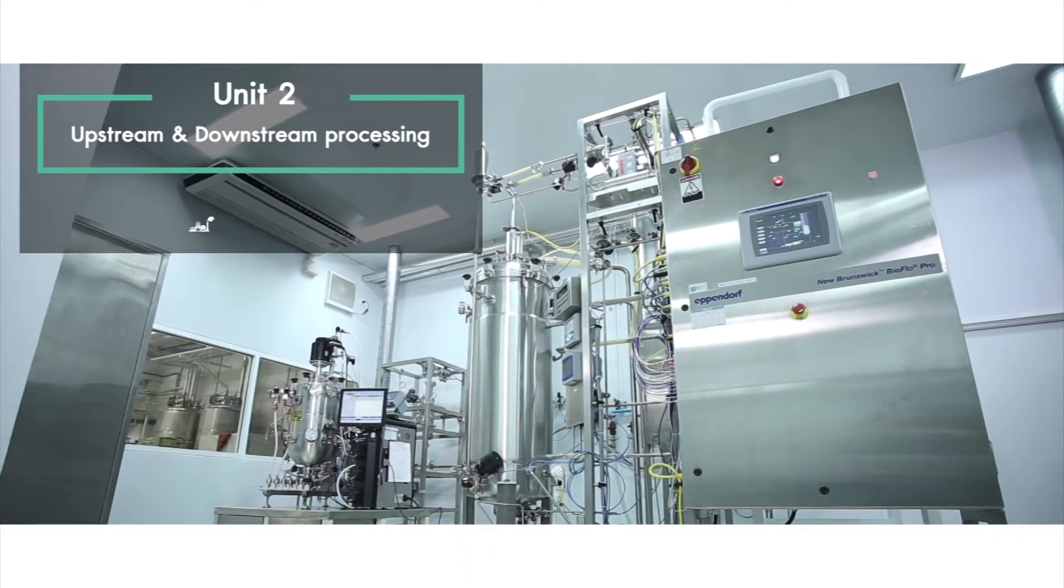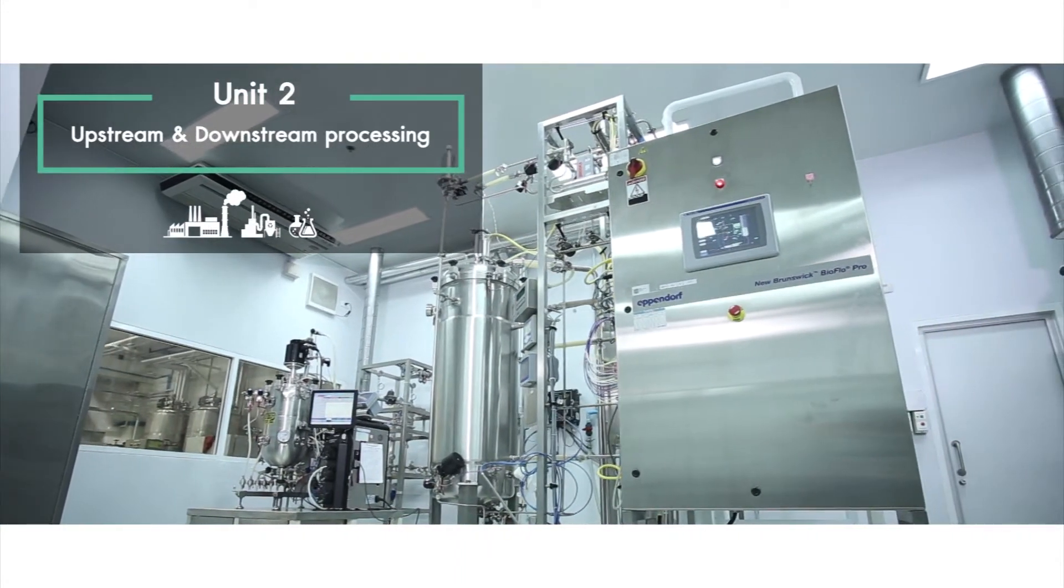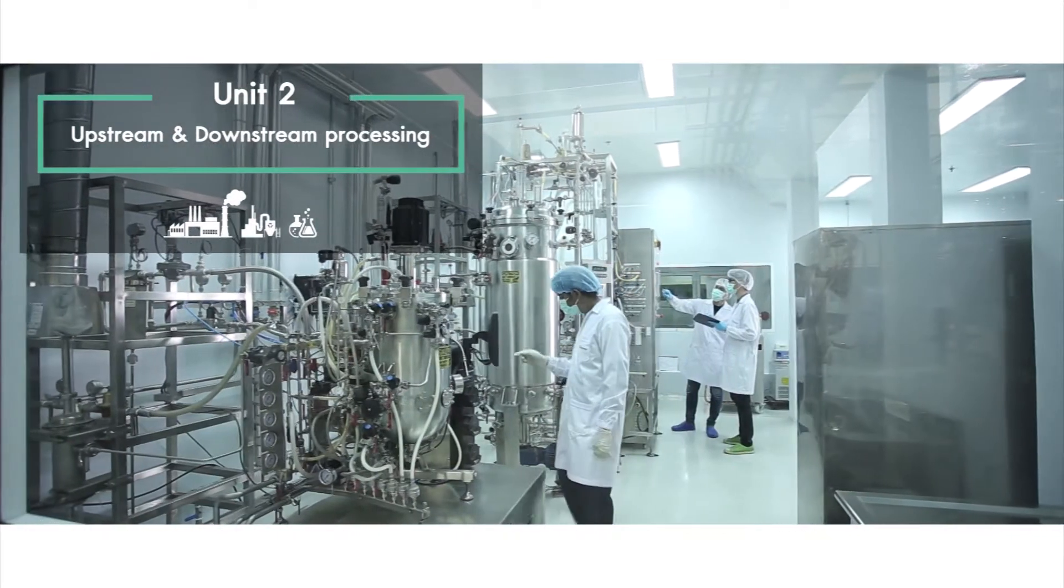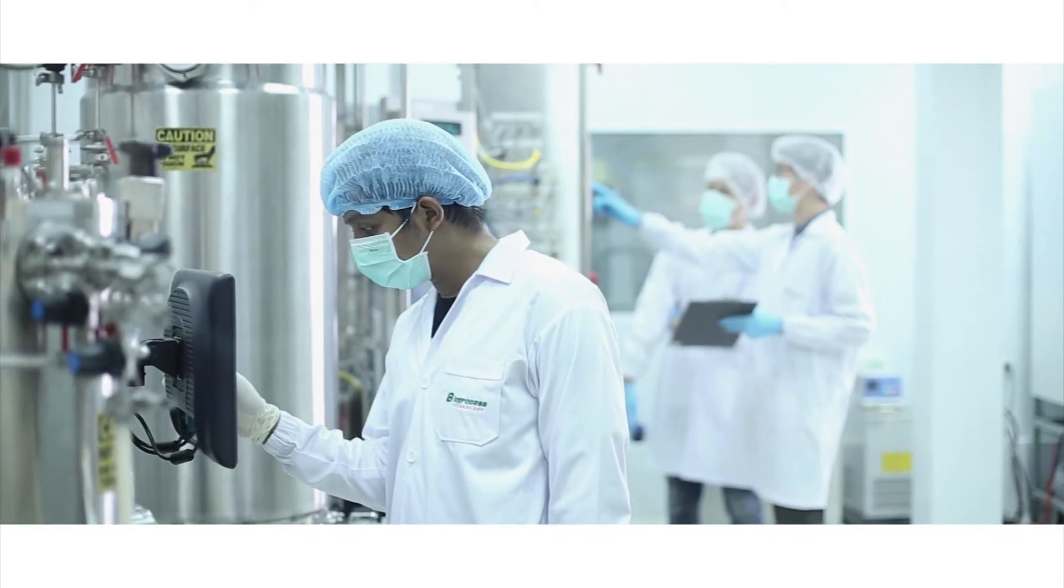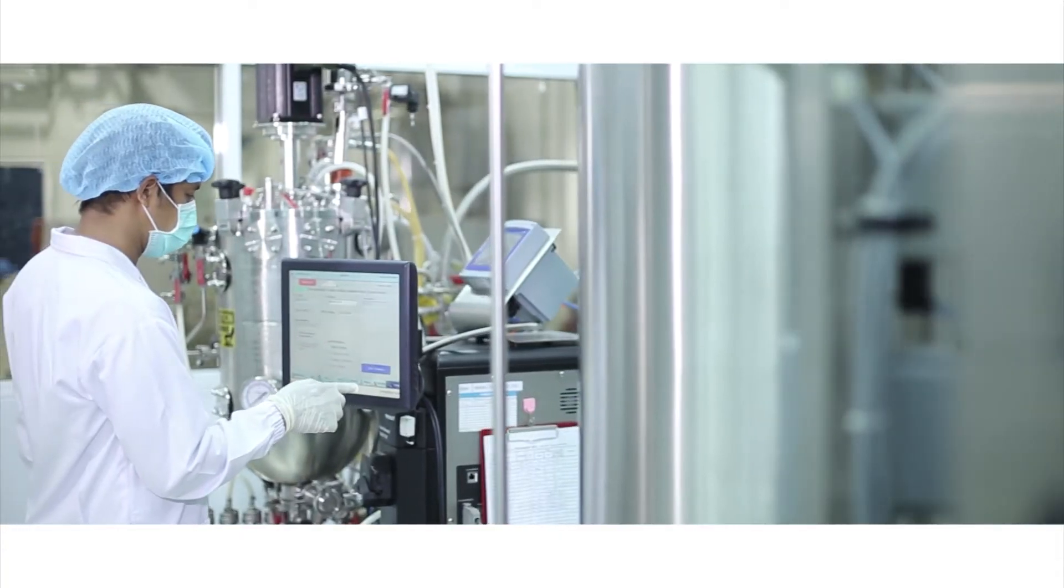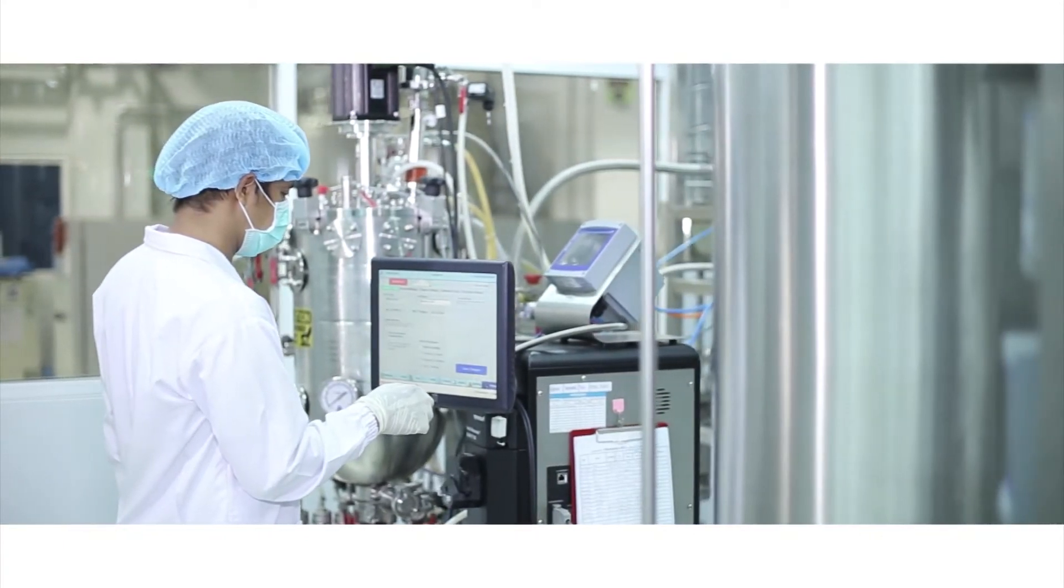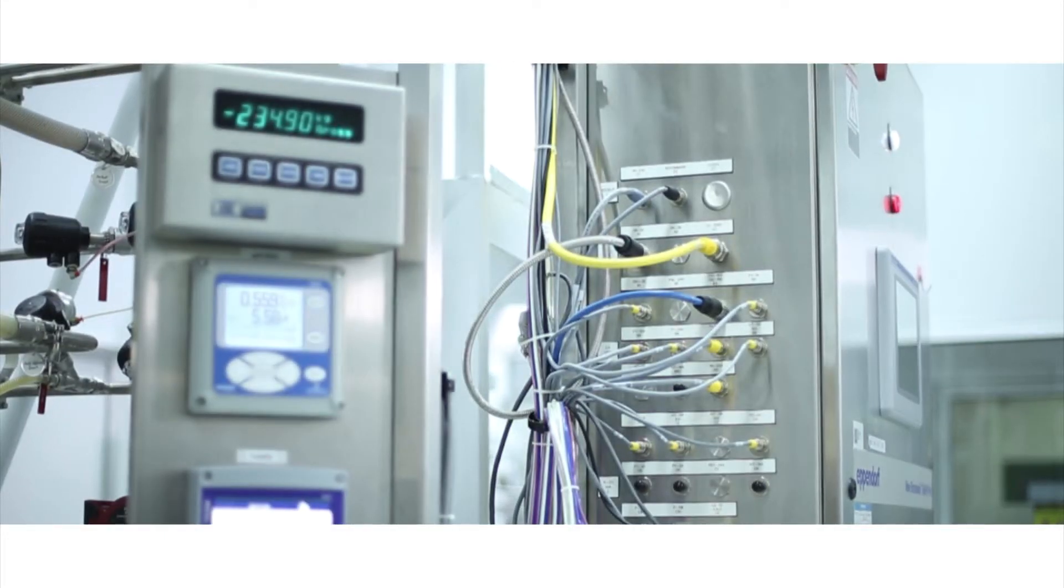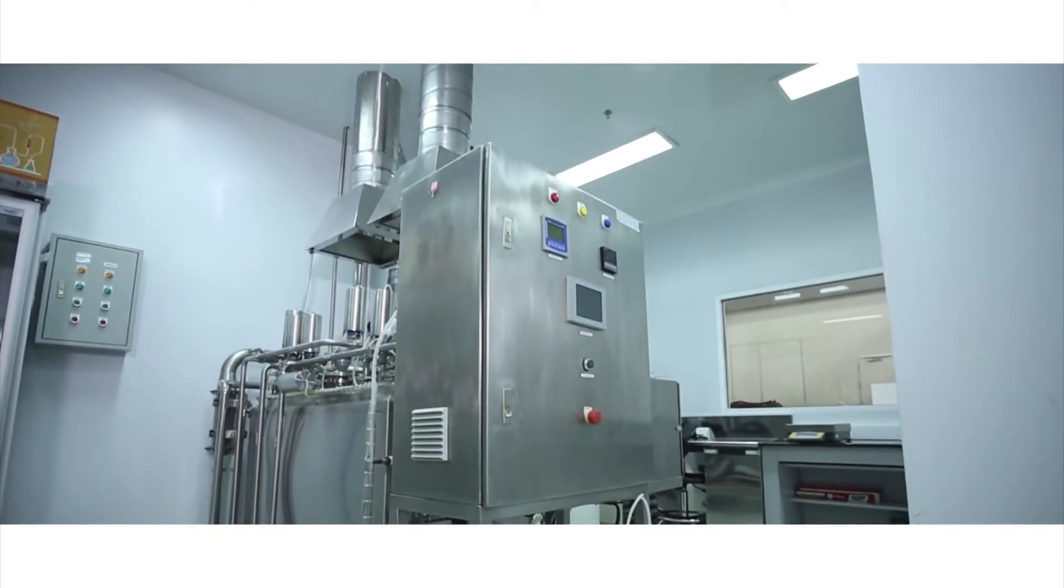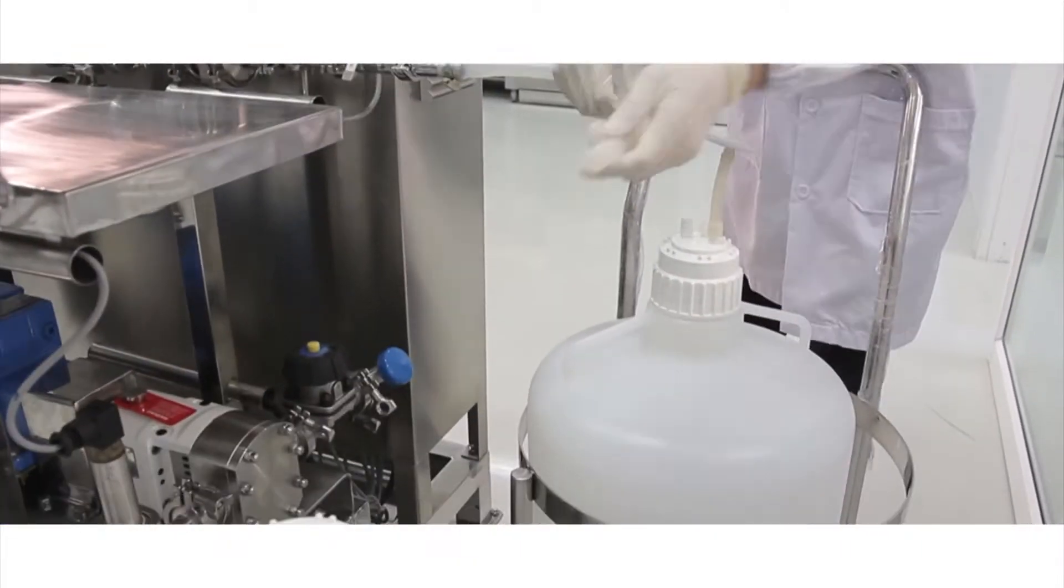Unit 2: Upstream and Downstream Processing. This scale-up unit was designed to comply with the guideline of Good Industrial Large-Scale Practice, or GILSP, for operation of genetically modified microorganisms, GMO, under LS1 containment by submerged fermentation and downstream processing technologies.